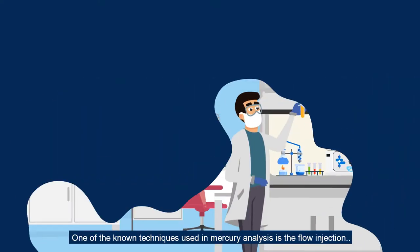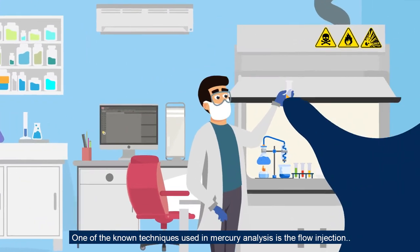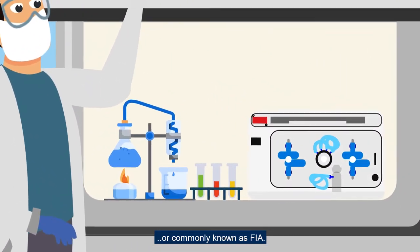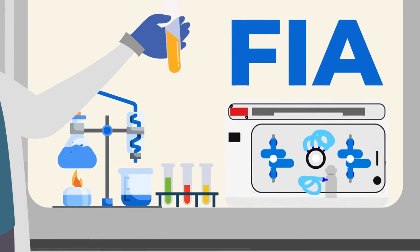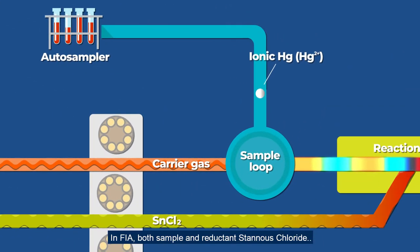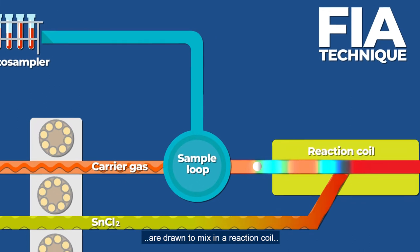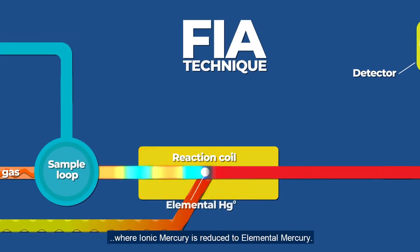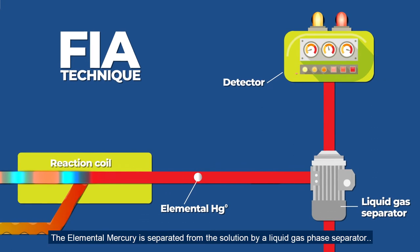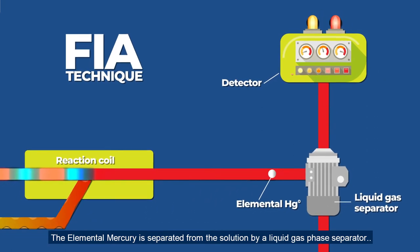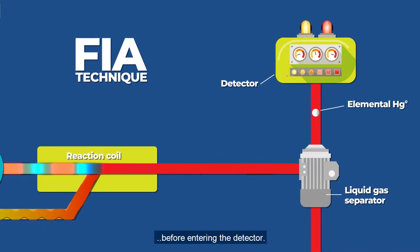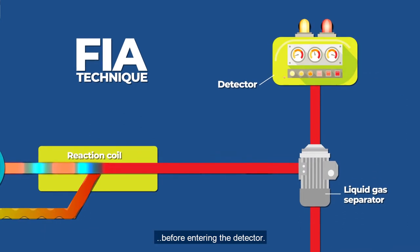One of the known techniques used in mercury analysis is the flow injection, or commonly known as FIA. In FIA, both sample and reductant stannous chloride are drawn to mix in a reaction coil, where ionic mercury is reduced to elemental mercury. The elemental mercury is then separated from the solution by a liquid-gas phase separator before entering the detector.